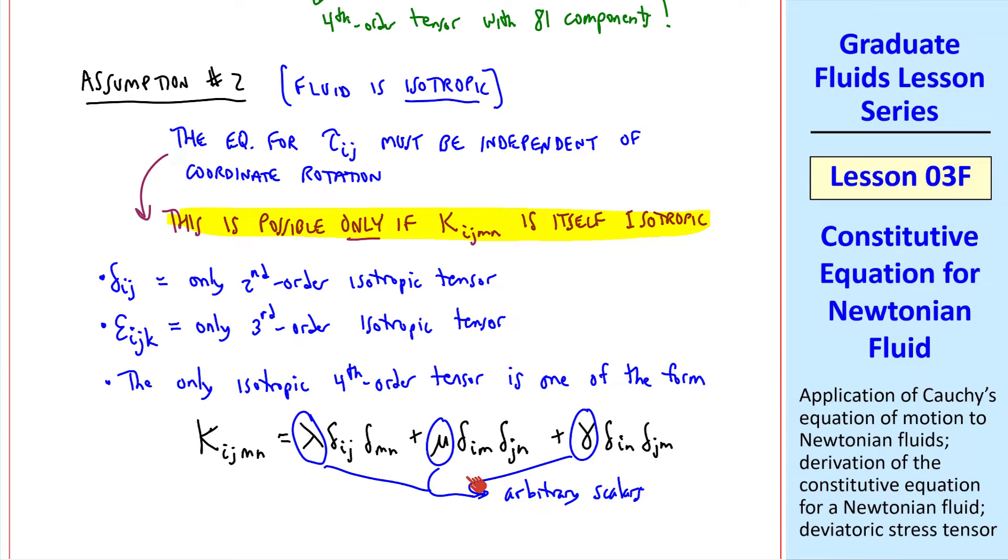So no matter what their values, this equation represents an isotropic fourth-order tensor. These three scalars are not necessarily constants. They can depend on the thermodynamic state, for example. In other words, they can be functions of rho, p, and t.